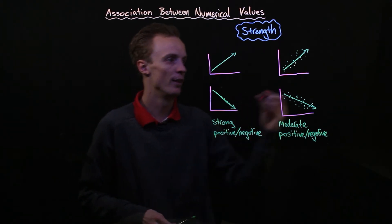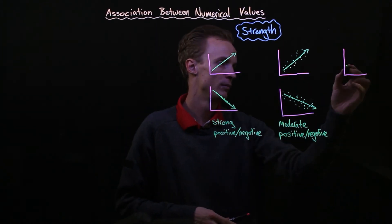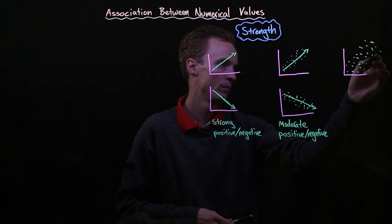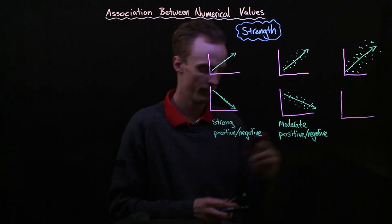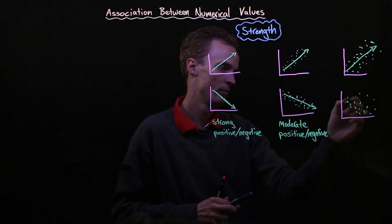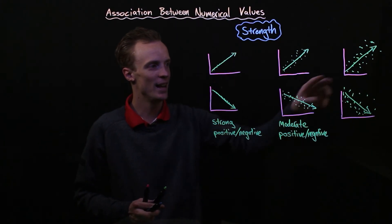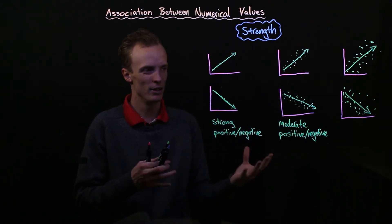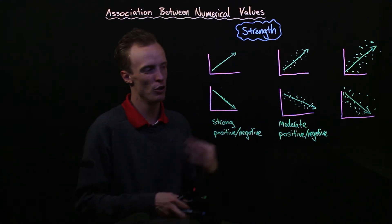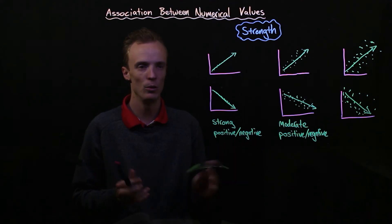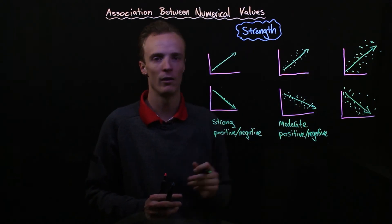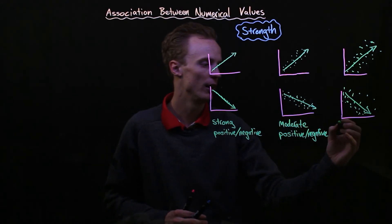The third level looks like this where the points are even more scattered and you're getting closer and closer to no correlation. We call this a weak positive correlation or a weak negative correlation.